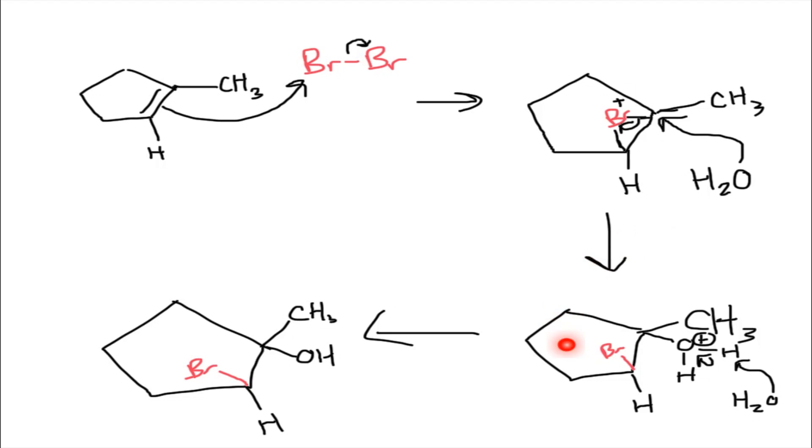So then as a result you form this molecule here with a positive charge on that oxygen. And so you can see here that the bromine and oxygen are on opposite sides. So they are trans to one another.